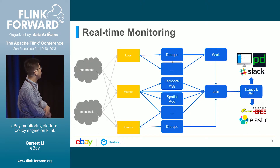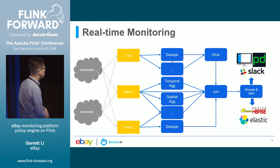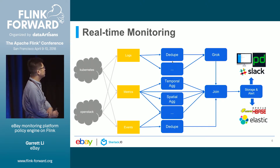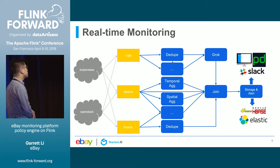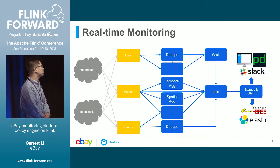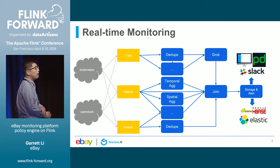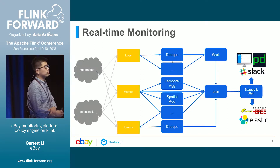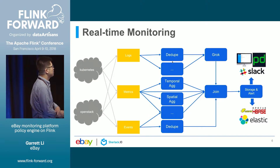Once the data comes to our monitoring platform, we can use the policy engine to apply pre-processing and alerting policy rules. Usually for logs, we will apply some Grok functions to convert unstructured data to structured data. For events, we usually apply some dedupe functions on a specific field to remove duplicate records. For metrics, we apply temporal regression and spatial regression against raw metrics to generate statistical histograms. After pre-processing, we can join these metrics together and do further arithmetic computation and threshold alerting. Once an alert is generated, the user will be notified through multiple channels like Slack, PagerDuty, or email.